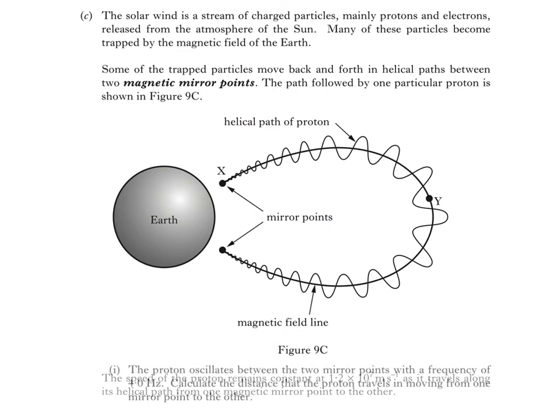Part one of the question says the proton oscillates between the two mirror points with a frequency of 4 hertz. Calculate the distance that the proton travels in moving from one mirror point to the other. So this is the motion of the proton. It follows a helical path from point X round to the next mirror point, then back four times per second. It's also worth noting that the radius of the helical path increases when the proton's further from the earth.